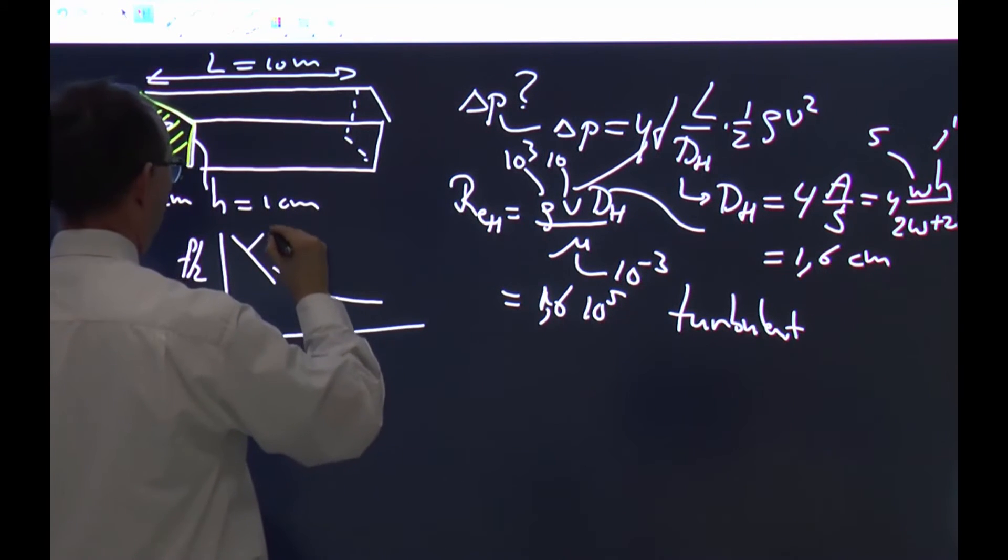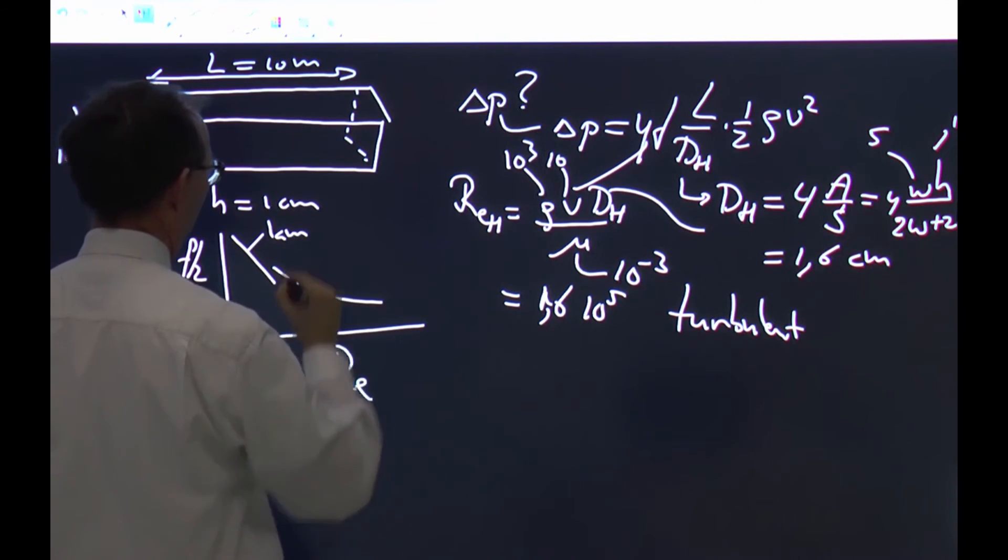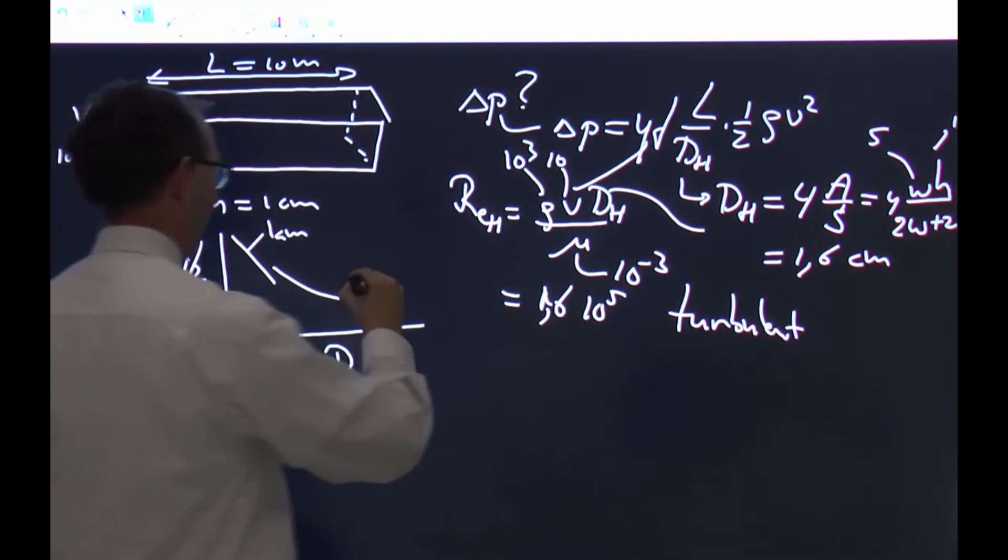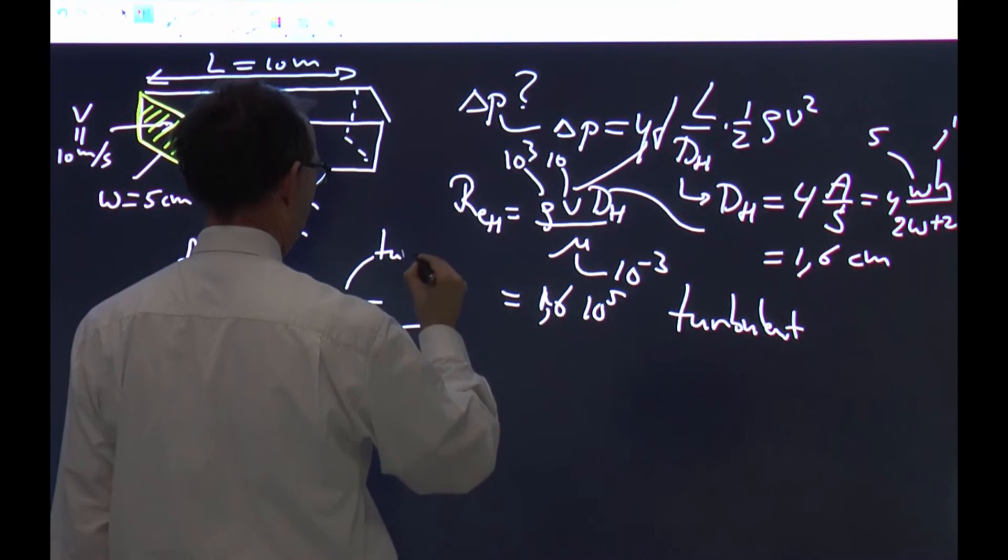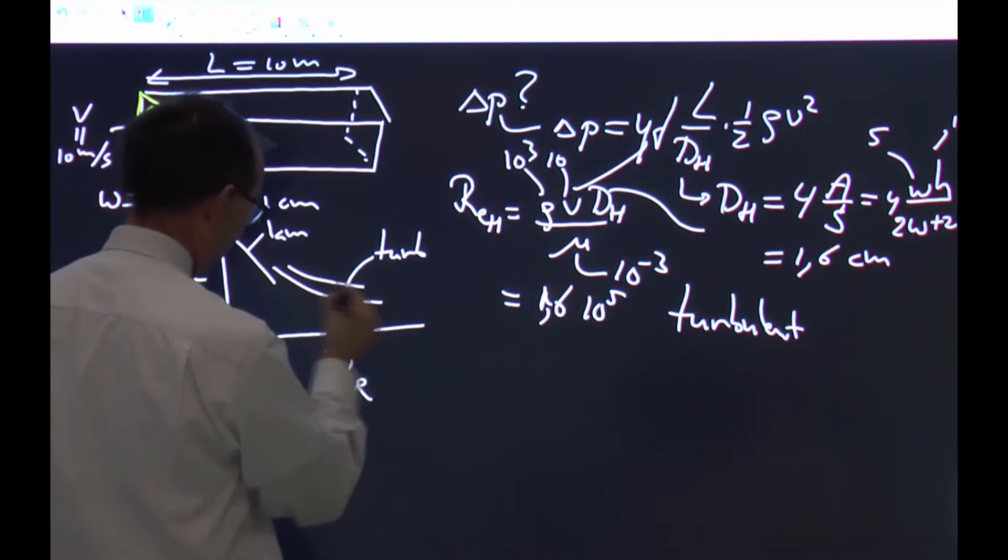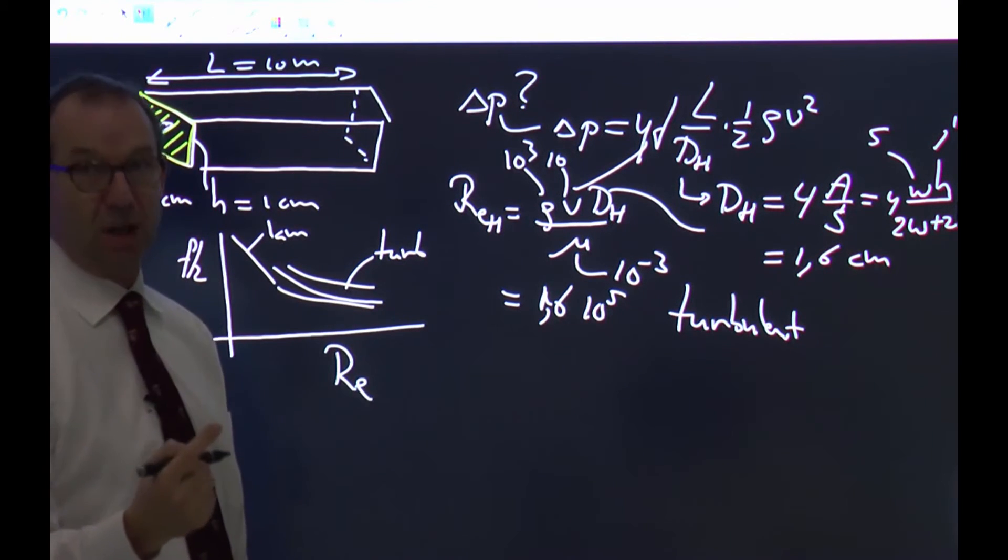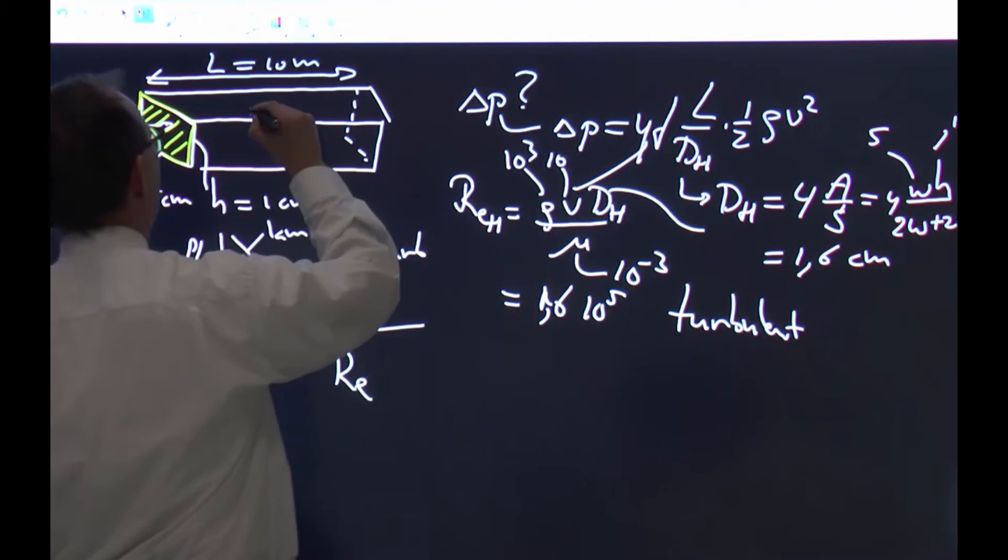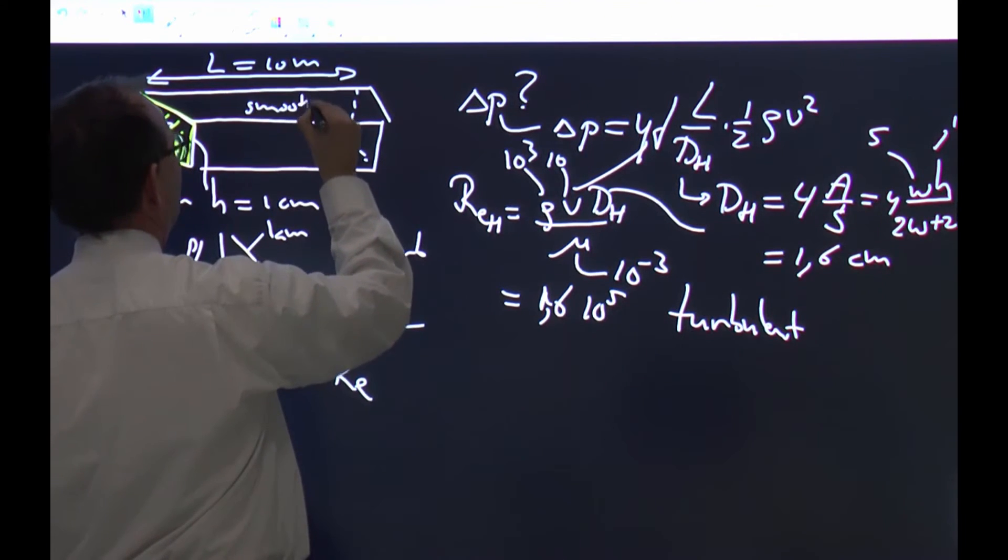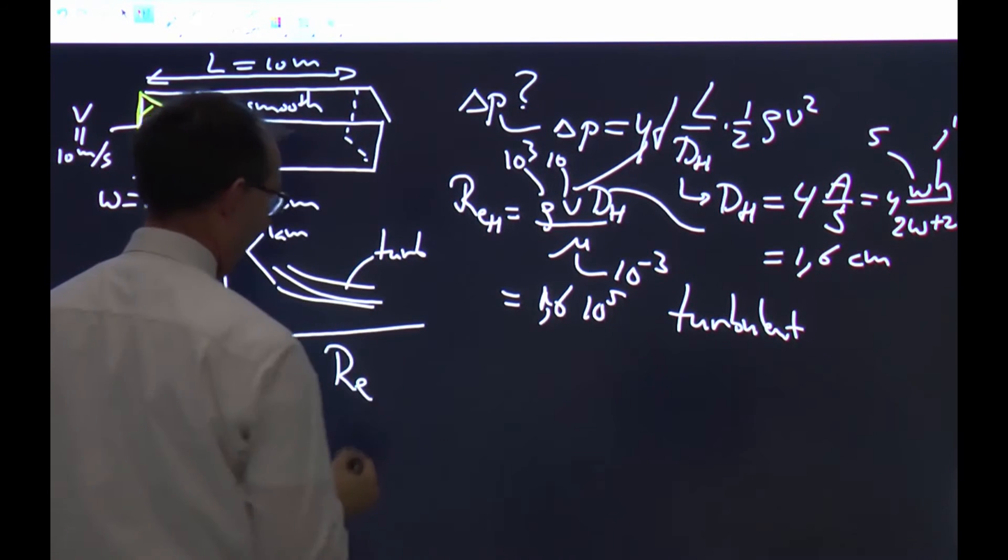You have a laminar part at low Reynolds number, which we don't have, and you have the turbulent part. Actually, you have a whole set of lines, depending on how smooth the duct or tube is. We're going to assume that these walls are all smooth, meaning that we need the lower line.